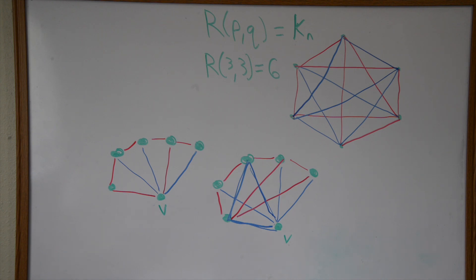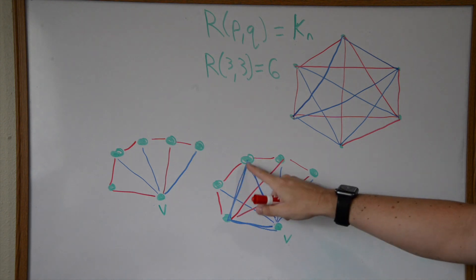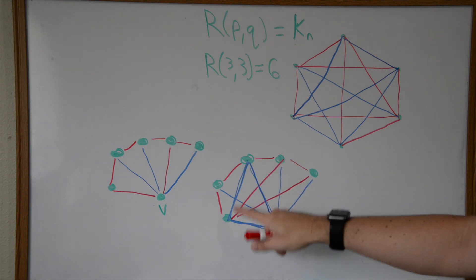Again, the pigeonhole principle. There's only two options and in this case we had three options or three iterations of that option, which means since all of these outer edges were red, if any two of these were red it's gonna make a triangle.